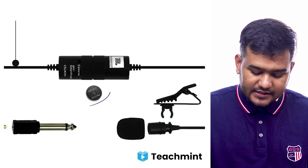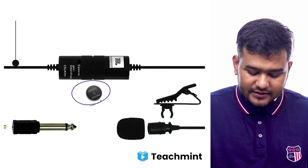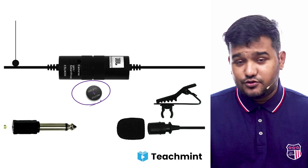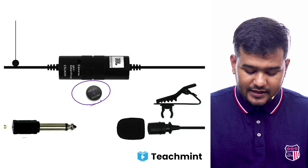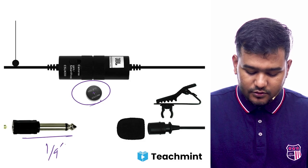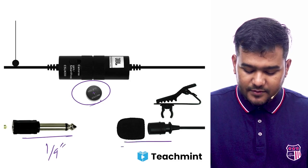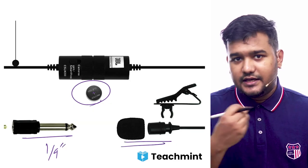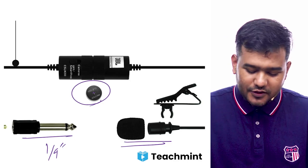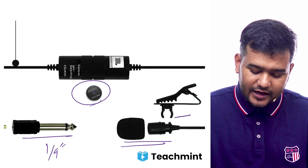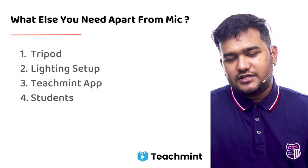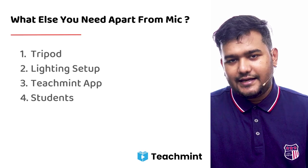As you can see, the package includes a battery with positive and negative markings, all accessories inside the box, a quarter adapter, the mic itself with a sponge cover to reduce wind noise, and a clip. With this, you now understand the different types of mics and what to look for when purchasing one.